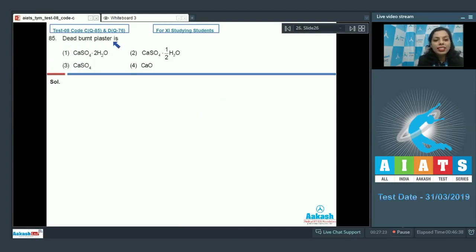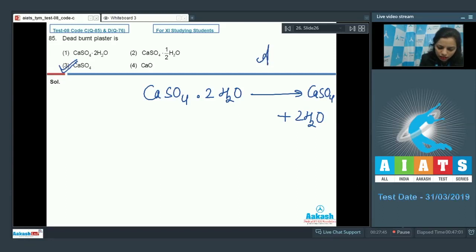After that, question number 85: Dead burnt plaster is... Dead burnt plaster is obtained when gypsum is heated above 273 kelvin temperature, and there is the formation of CaSO4, and all the water of crystallization is removed from it. So CaSO4 is dead burnt plaster. That's why option 3 becomes your correct answer.